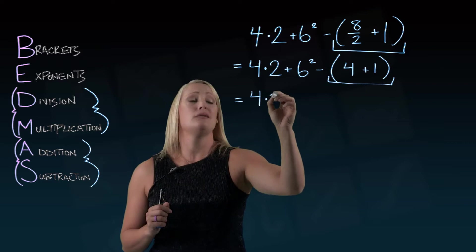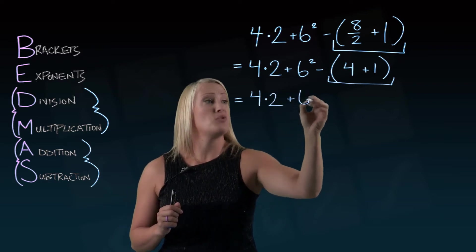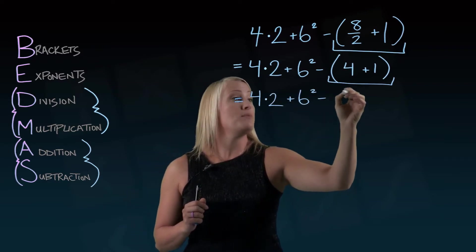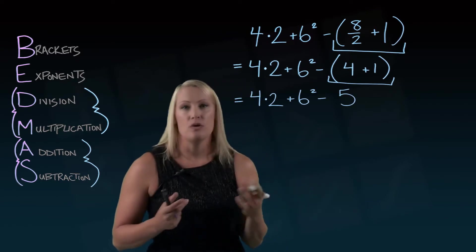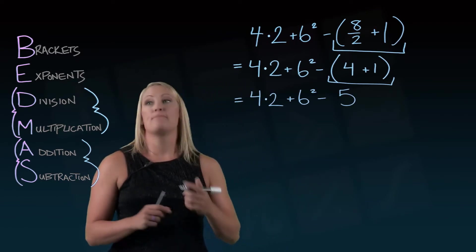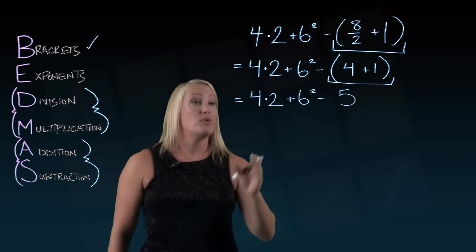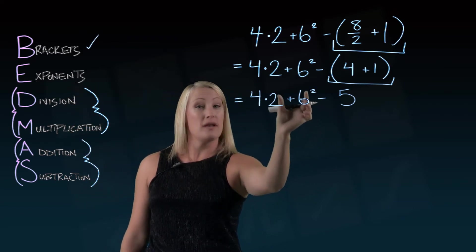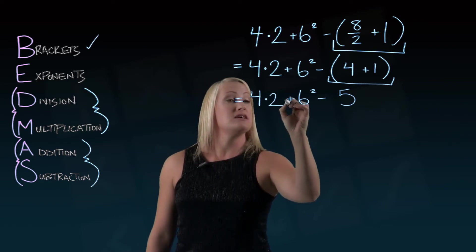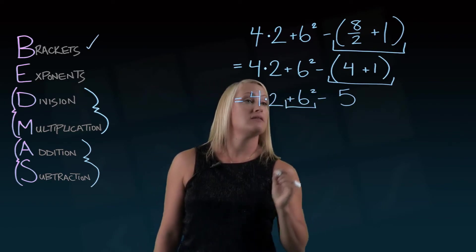You can of course skip steps if you're more comfortable with BEDMAS. But I'm going to do one step at a time just to make sure it's clear. So we have dealt with the brackets. We're done. Let's move on to the next, which is exponents. When I look at this, I see one exponent right here. So I'm going to deal with 6 squared.